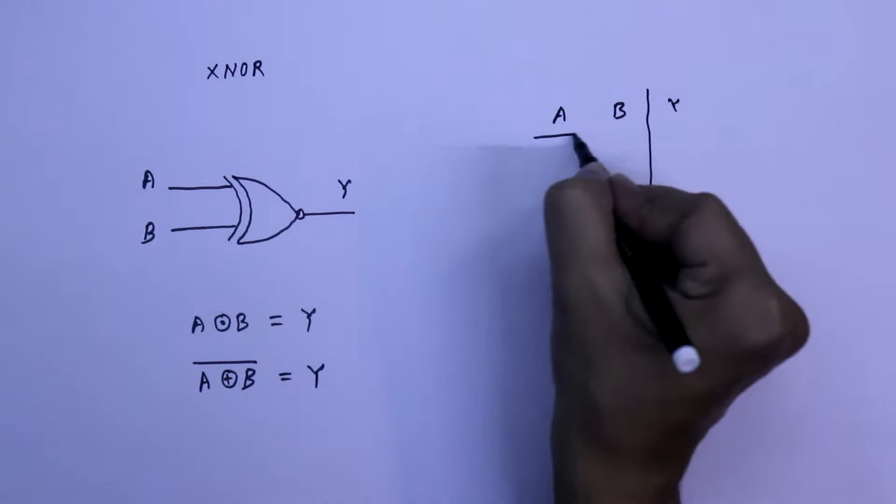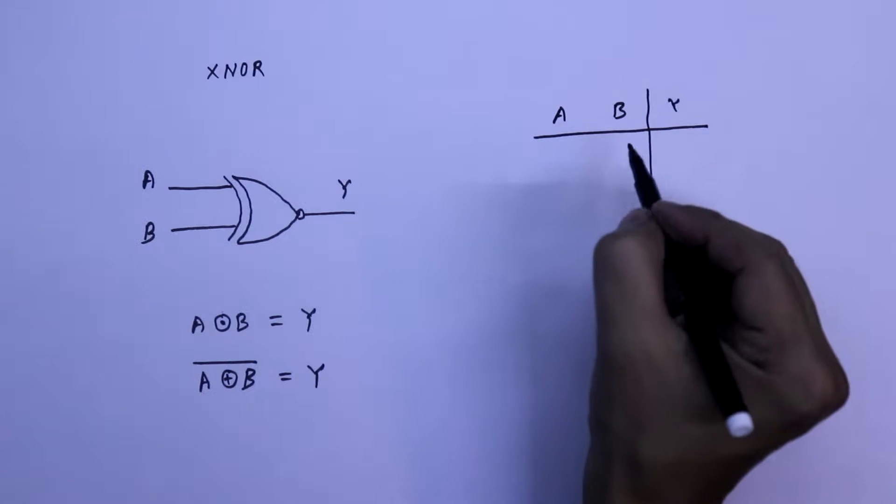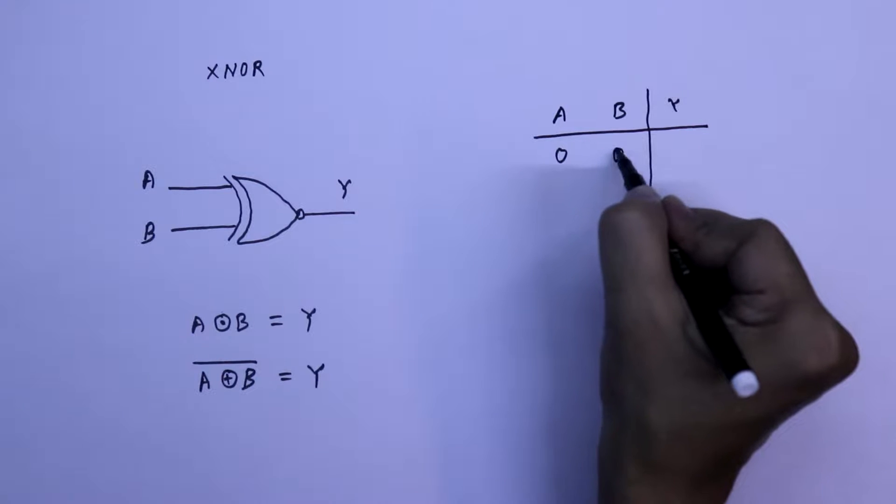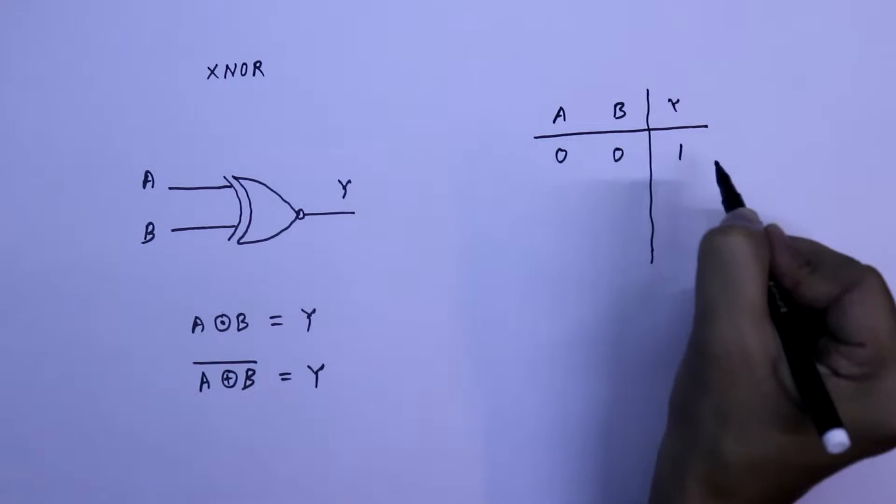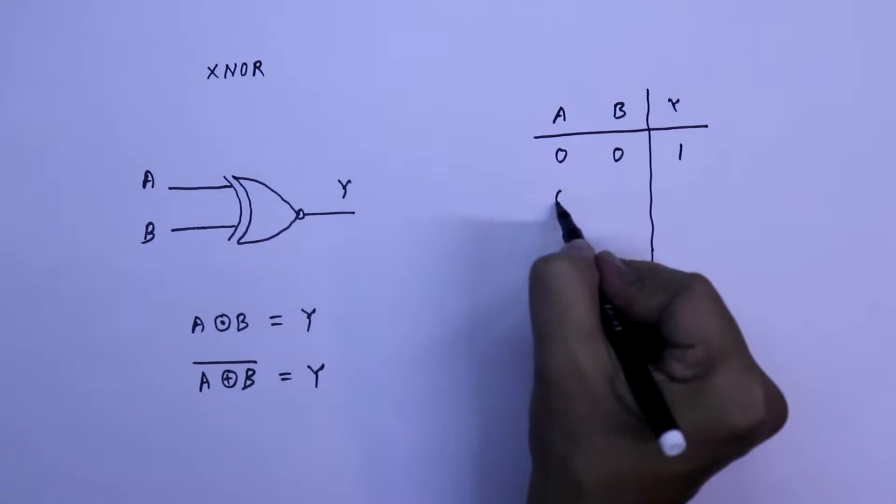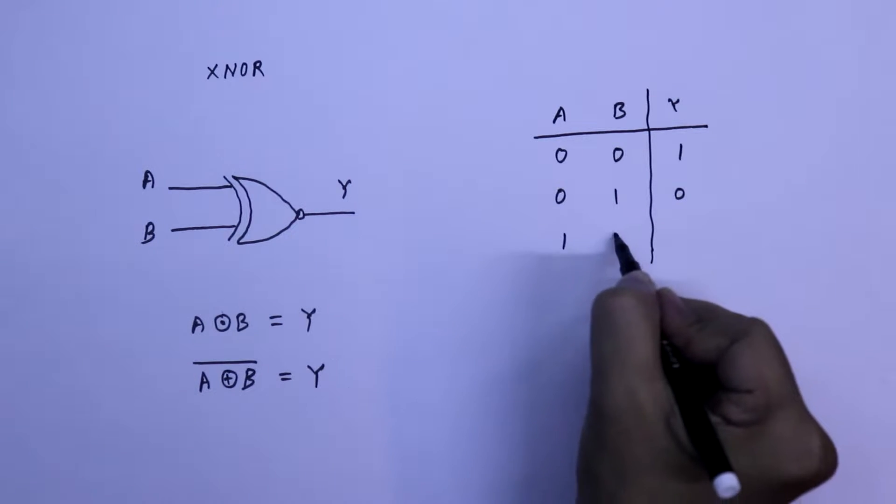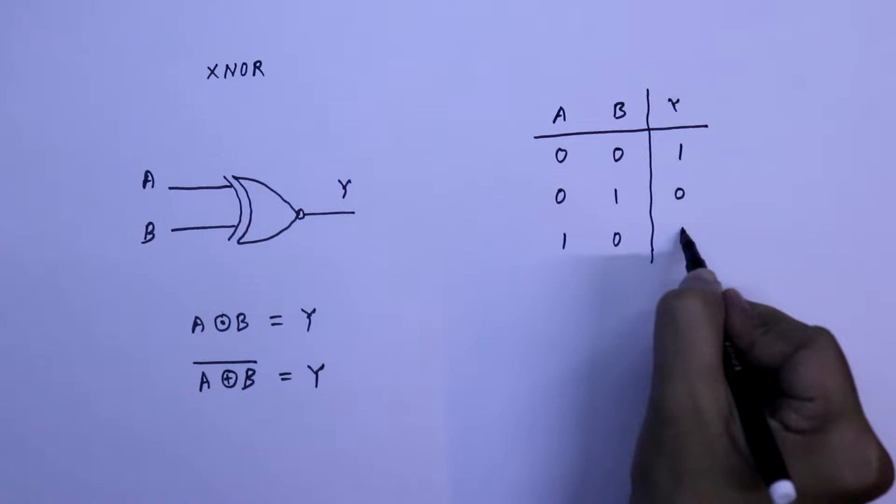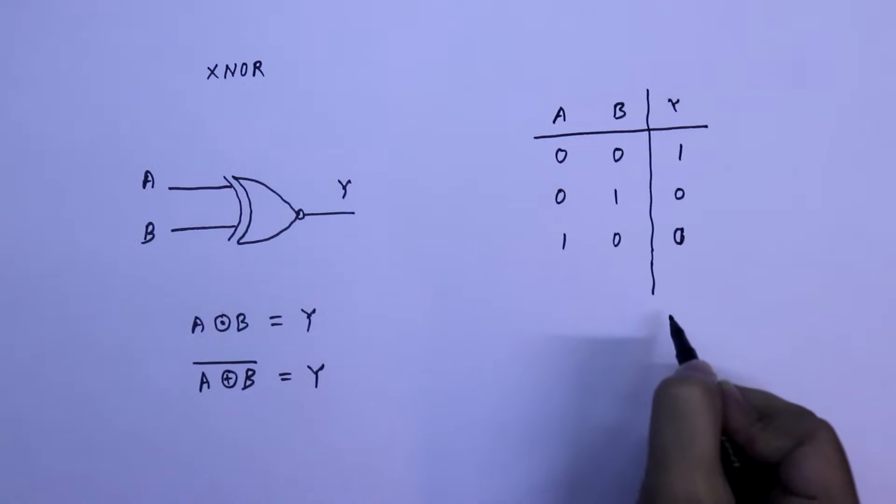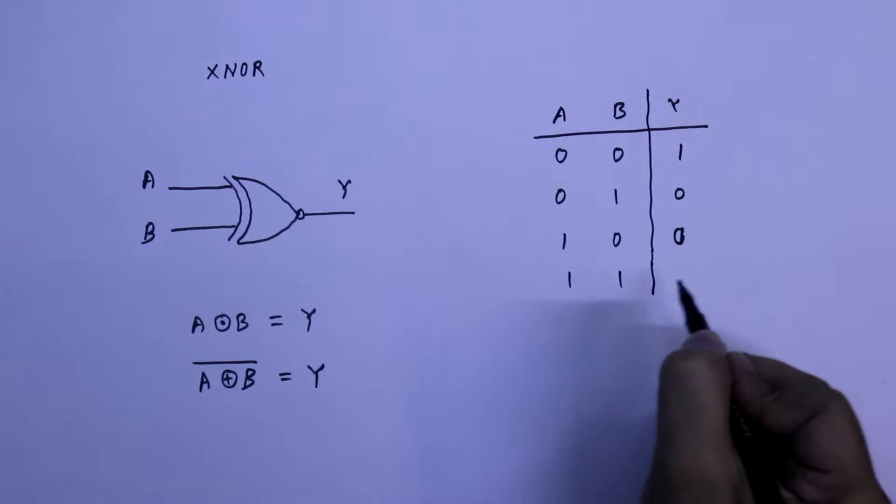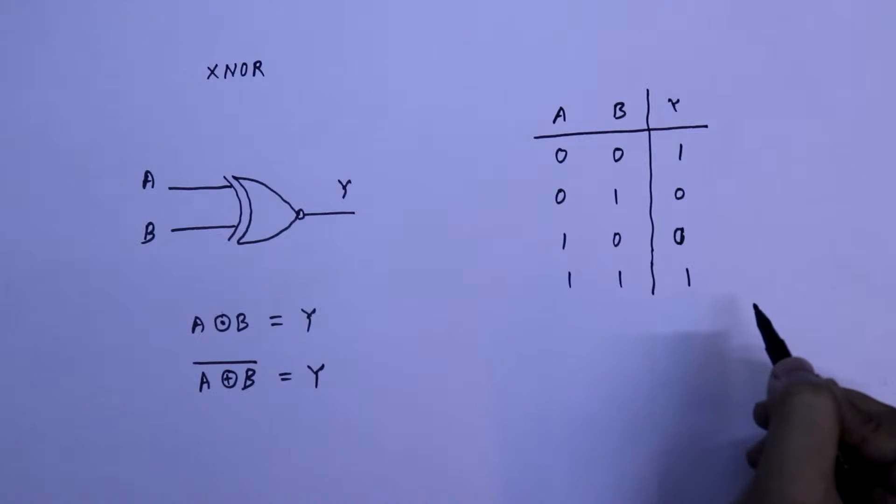The truth table will be, when both the inputs are equal, that is, if both the input is 0 and 0, then we will get 1 as output. If these inputs are different, then we will get 0. Again, if we make this 1, both the inputs are equal, then we will have 1 as our output.